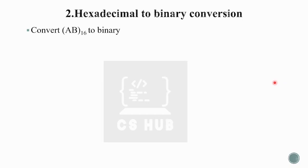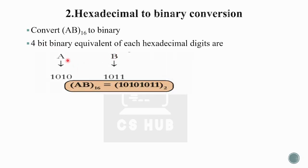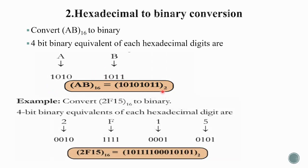In our example, convert AB base 16 to binary: A to binary is 1010, B to binary is 1011. After this, convert 2F15 hex to binary: 2 is 0010, F is 1111, 1 is 0001, 5 is 0101.